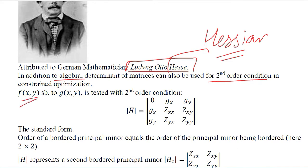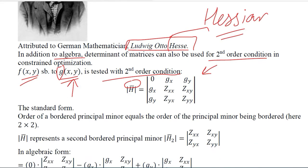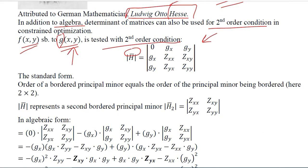This is the objective function and this is the constraint function. We are representing the constraint with G, and in the second order condition in matrix form we write it like this, which is the bordered Hessian. You can see a small border above H. This shows that this is not the simple Hessian — this is the bordered Hessian.